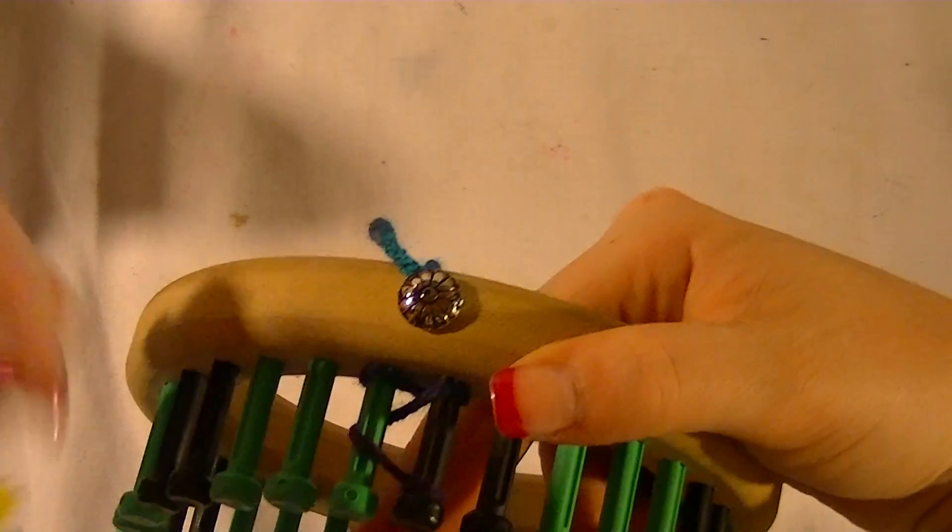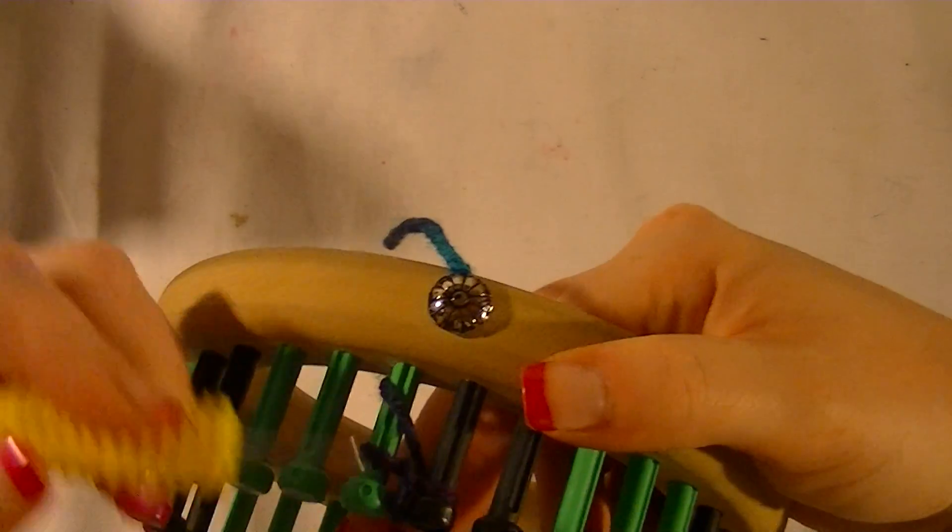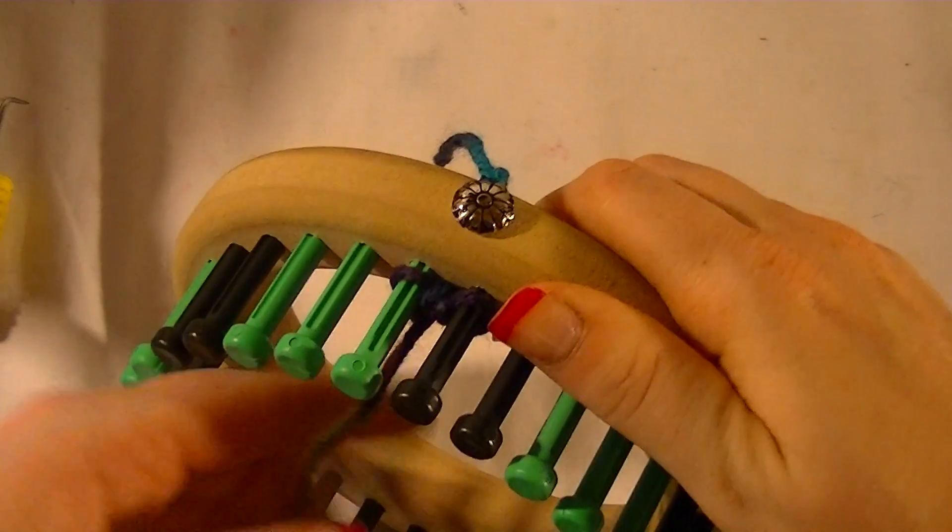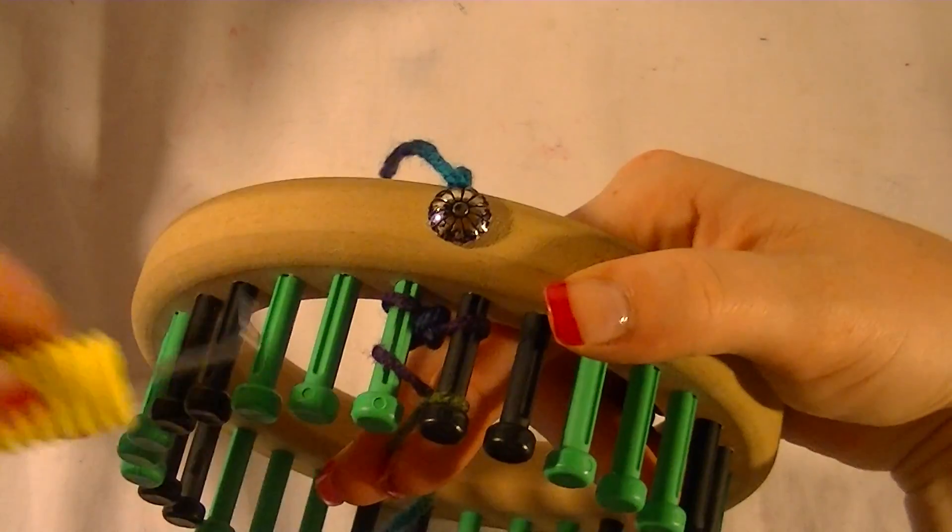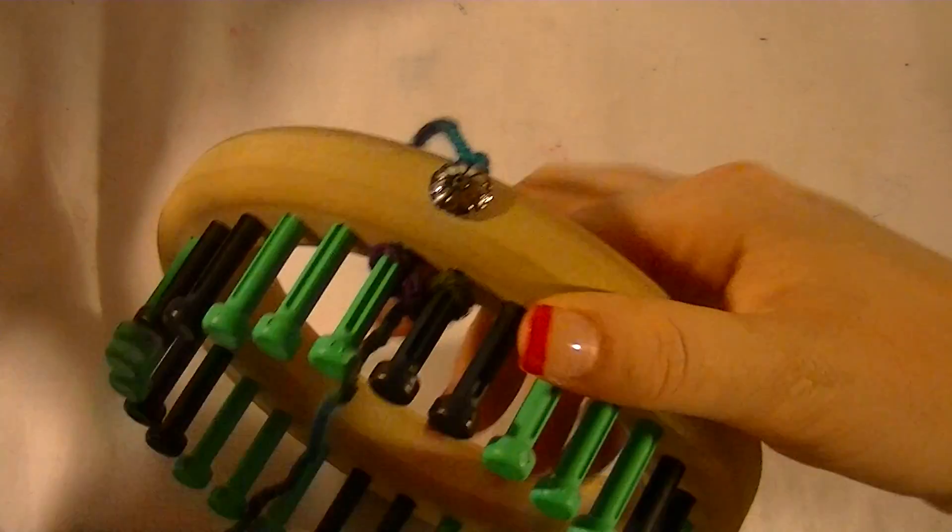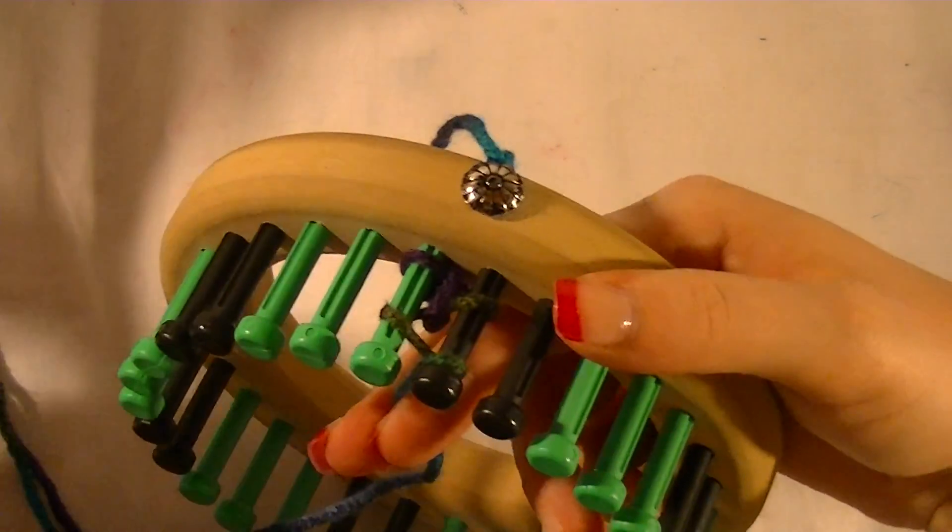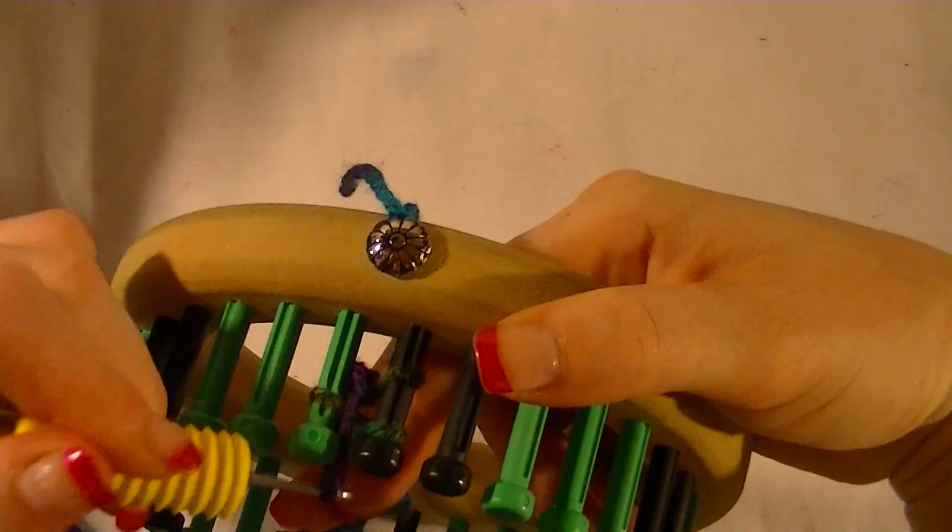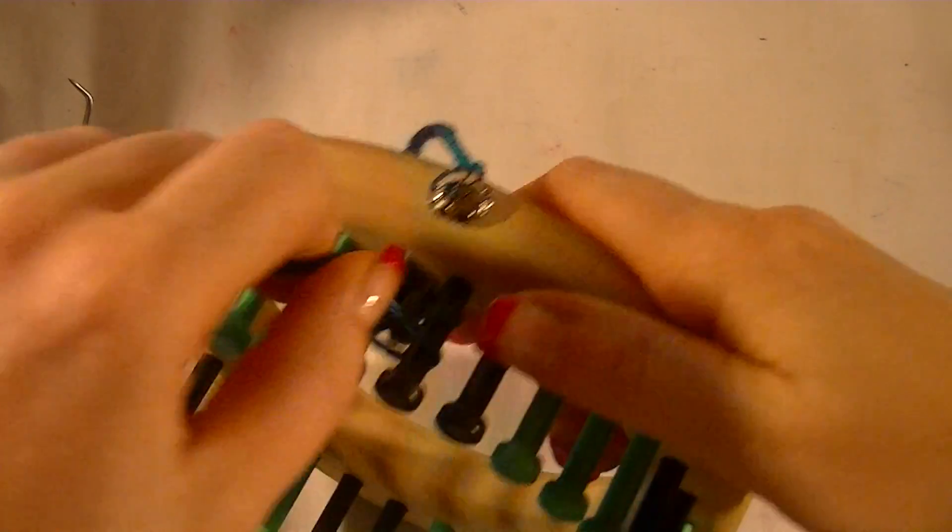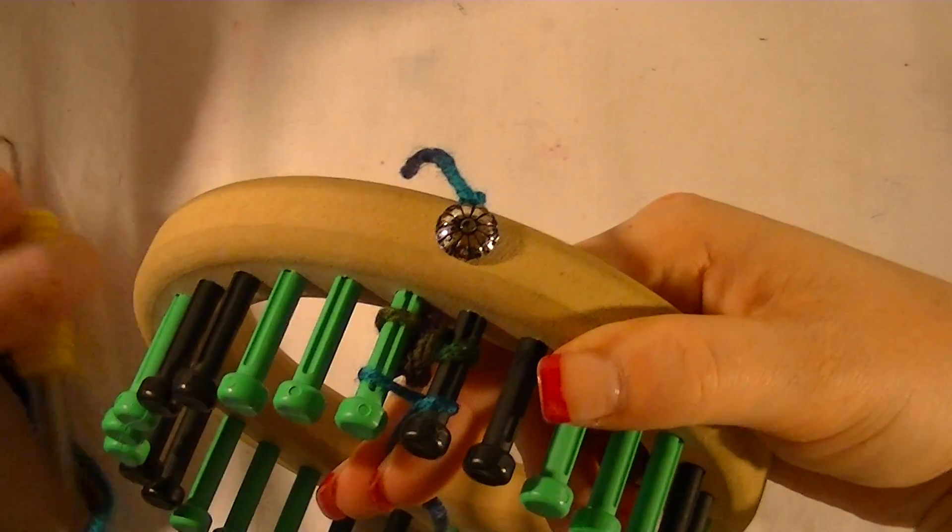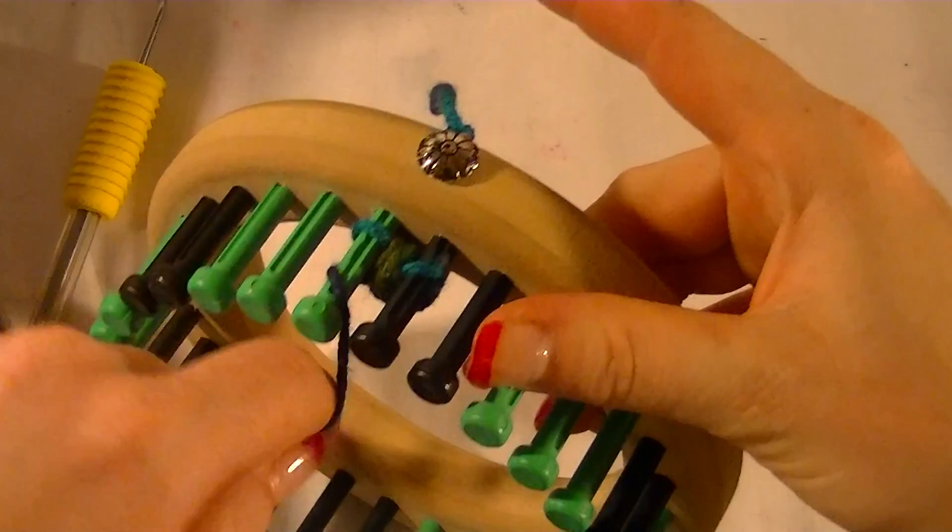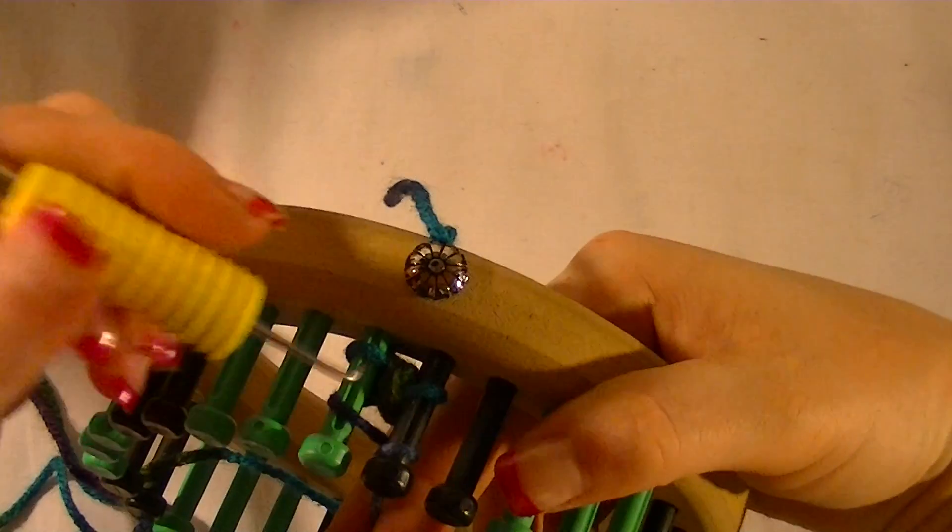You have two on the loop on the loom and take your bottom ones over the top. Push those down. Take the bottom to the top and push those down. Doing it this way your end will be finished off pretty nicely. So this is just one way to do it, and once you get it as long as you want, I'll show you in a moment how you take it off.